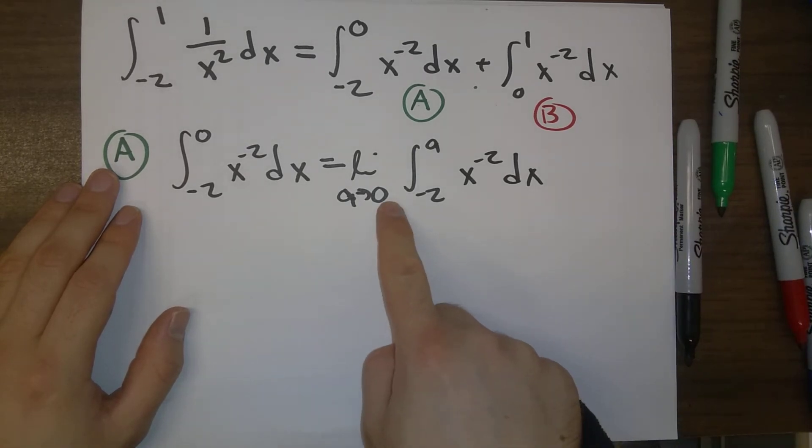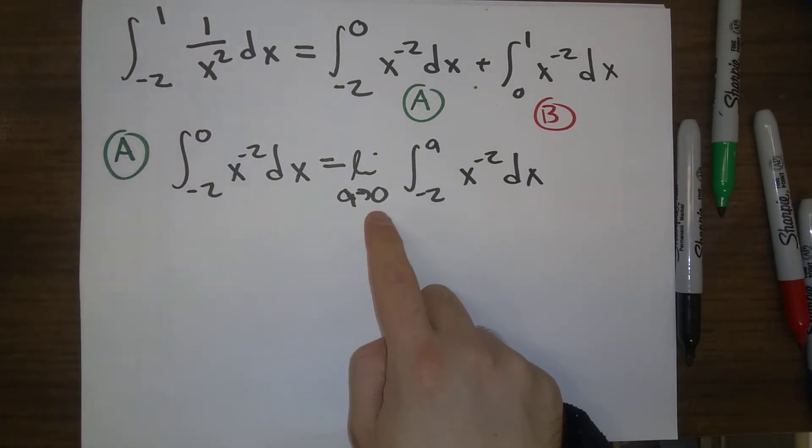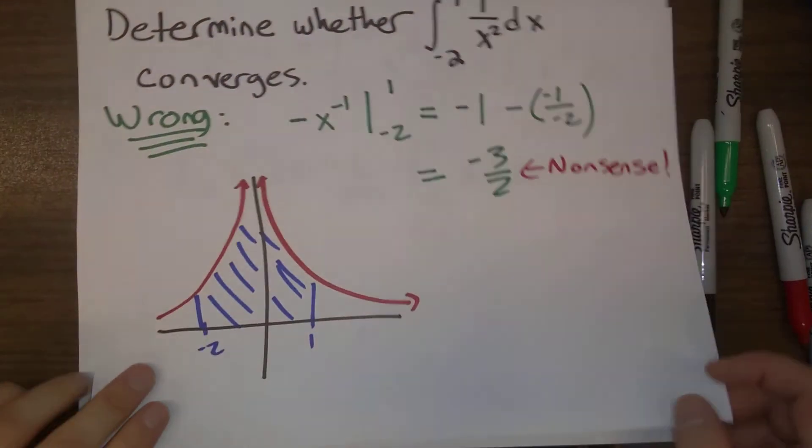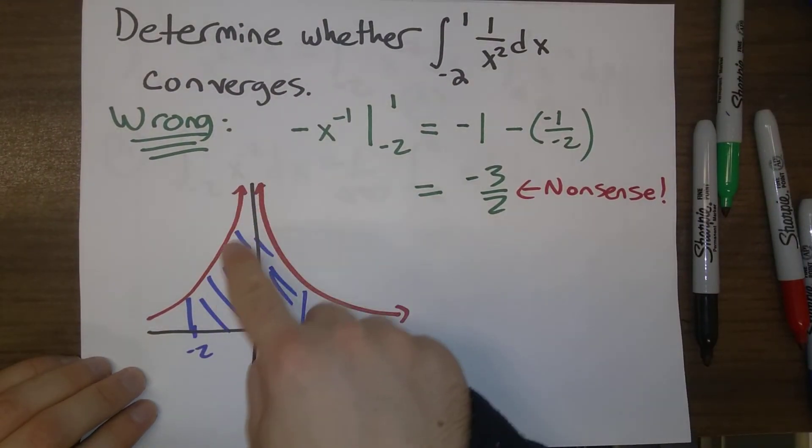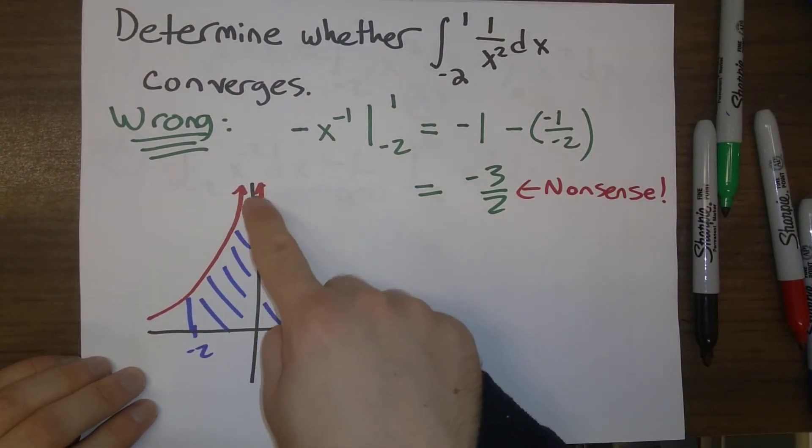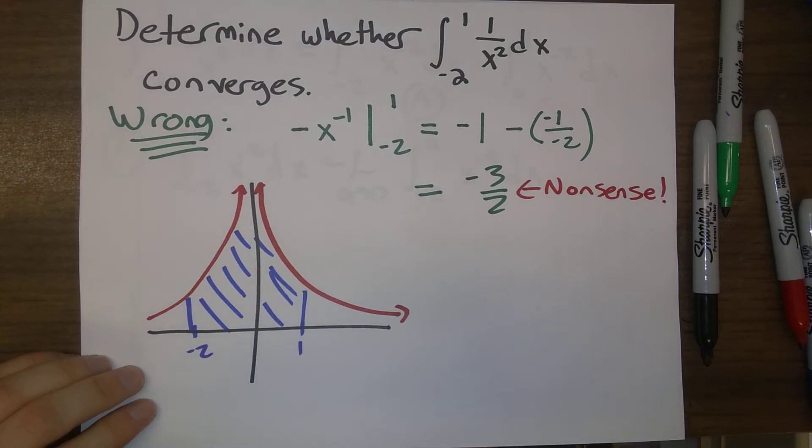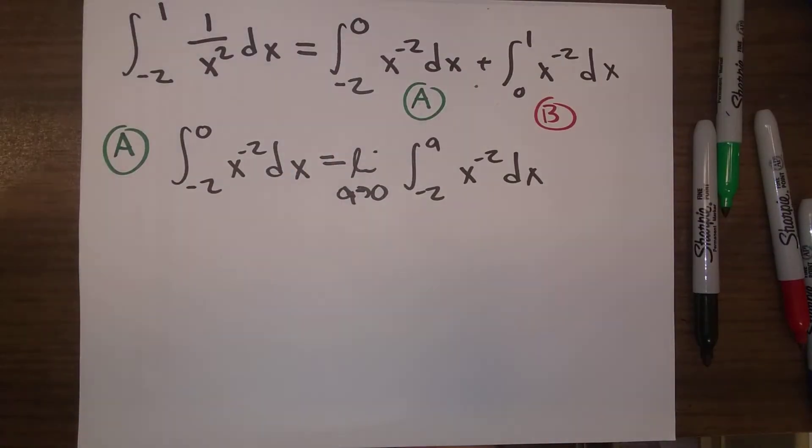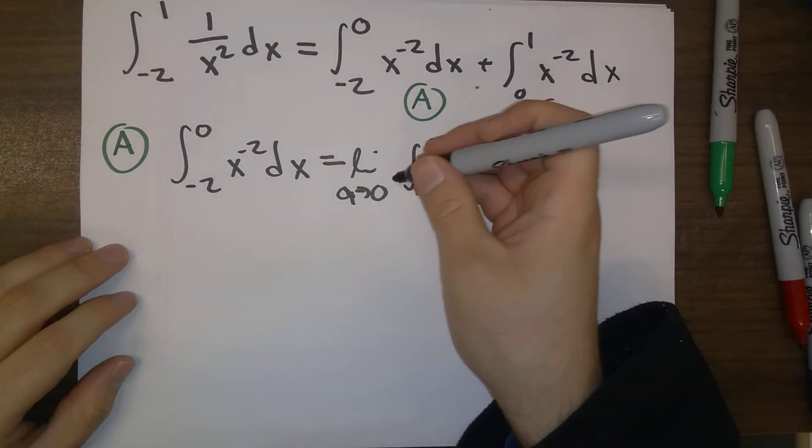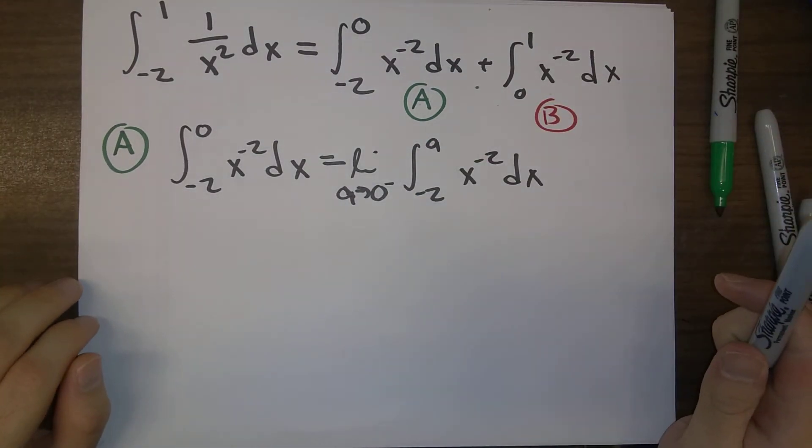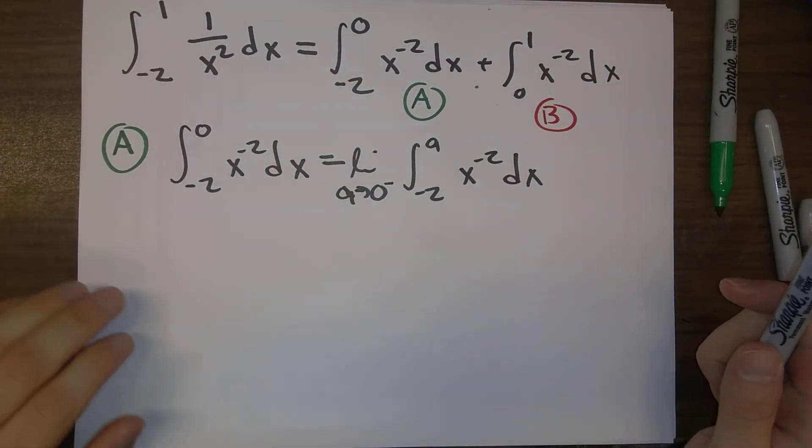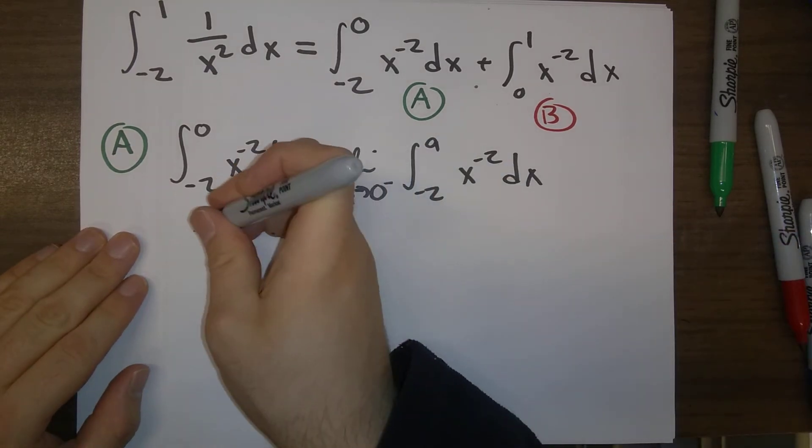Now actually, we want to be a little bit careful here. Limit as A goes to 0. So we're looking at this integral. It's not just A is going to 0. We're thinking particularly when A is going to 0 from the left. So we're thinking of A as a negative number that is really close to 0.